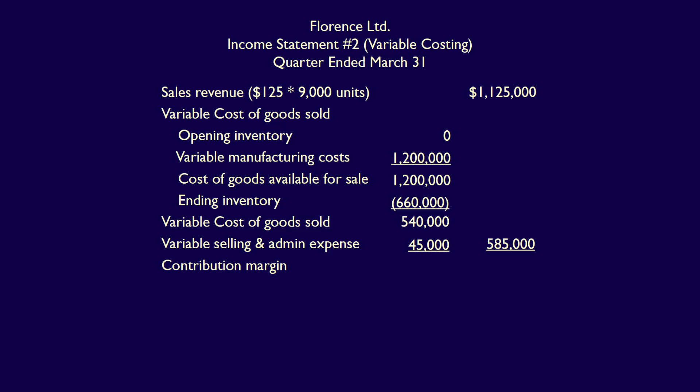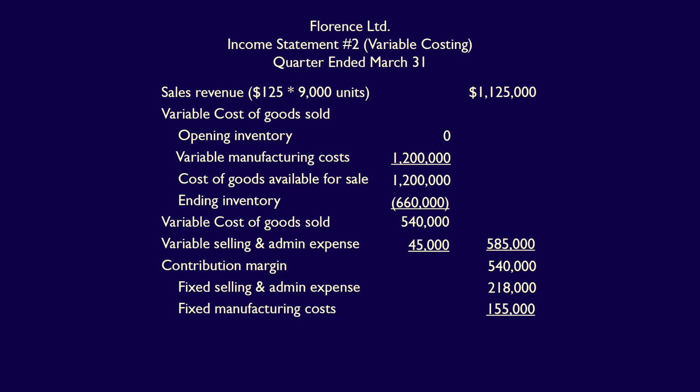Total variable cost is $585,000. Sales revenue of $1,125,000 minus total variable cost of $585,000 equals a contribution margin of $540,000. We then deduct all fixed costs: fixed selling and admin expense of $218,000, and 100% of fixed manufacturing costs of $155,000 — expensed as a period cost under variable costing. Operating income equals contribution margin minus all fixed costs: $540,000 minus $218,000 minus $155,000 equals $167,000.